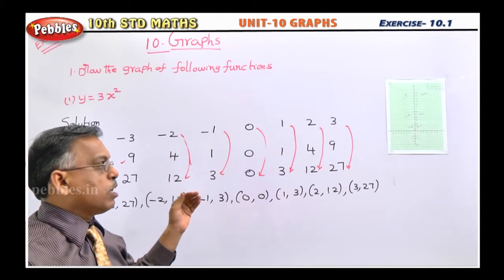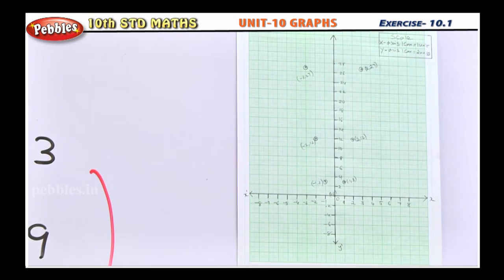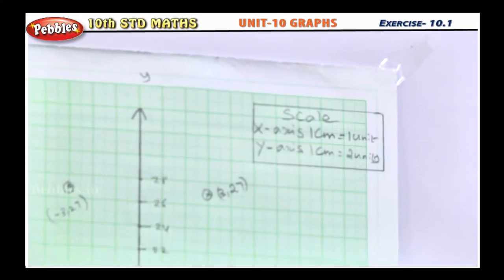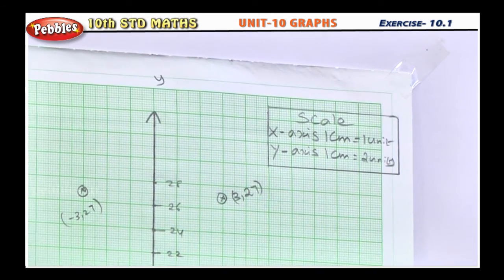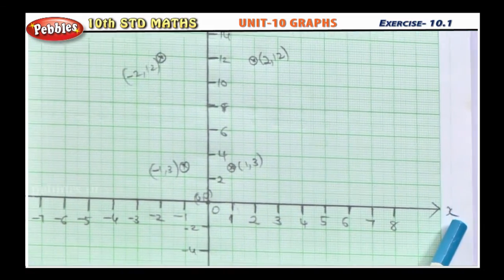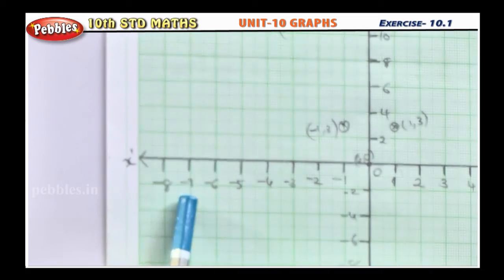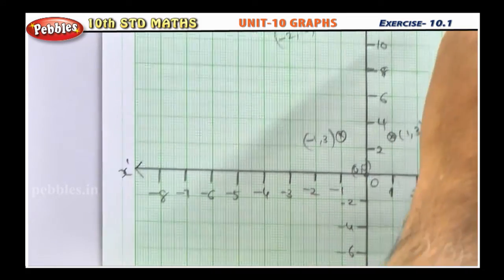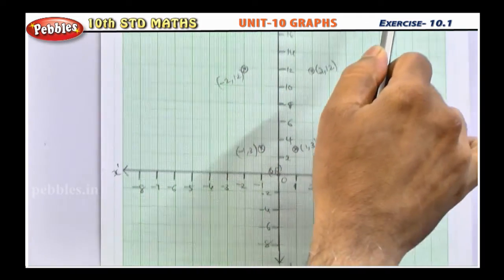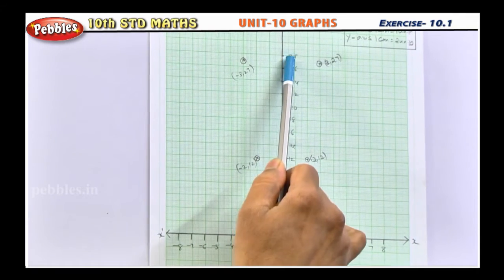Students, we'll see in the graph sheet how will you plot these points now. Students listen, the scale you have to mention first on x axis, 1 centimeter is 1 unit. You mark like 1, 2, 3, 4, 5, 6 something like this on the positive side of x axis. Negative side minus 1, minus 2, minus 3, minus 4, minus 5, minus 6, minus 7, minus 8. On x axis 1 centimeter is 1 unit. On y axis 1 centimeter is 2 units, that means 2, 4, 6, 8, like that you should mark up to 28.